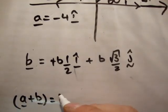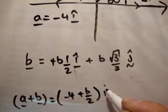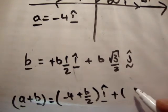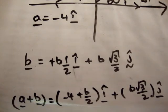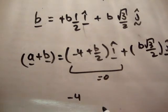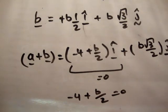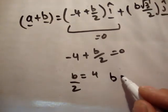So a plus b is equal to minus 4 plus b over 2 i-hat, plus b root 3 over 2 j-hat. What do we know? This equals 0, therefore minus 4 plus b over 2 is equal to 0. b over 2 is equal to 4, b equals 8.